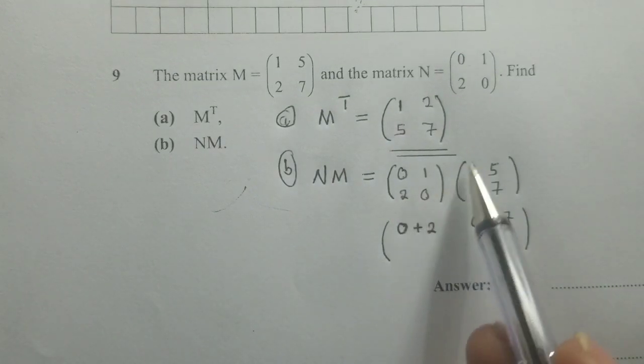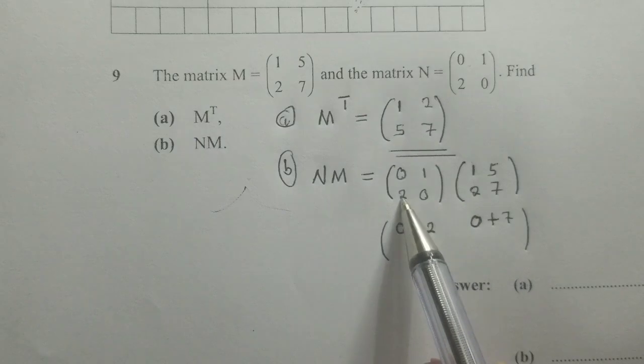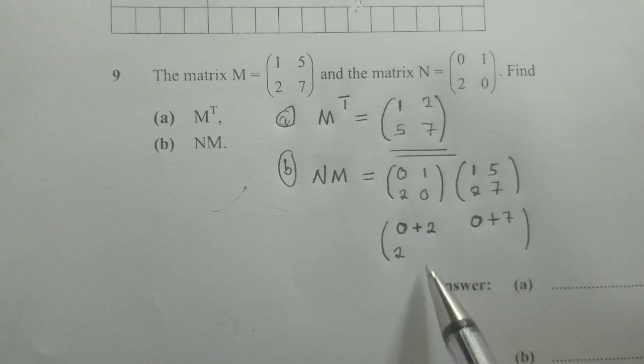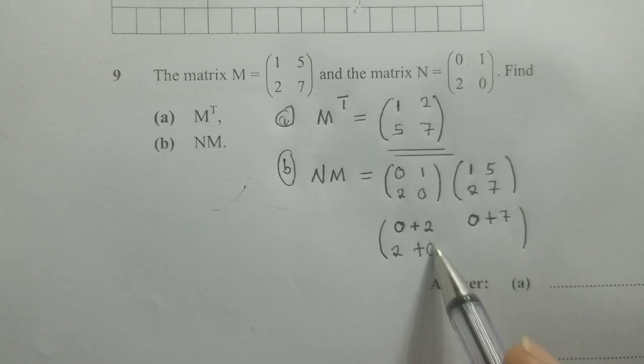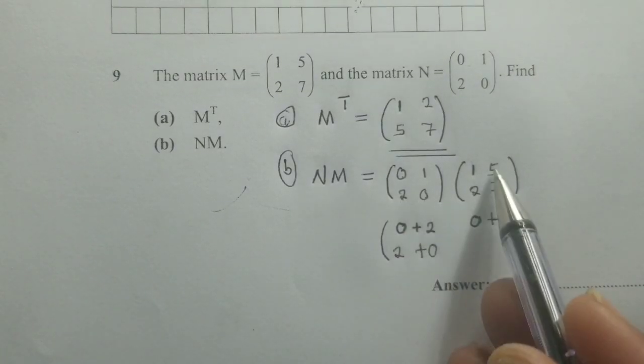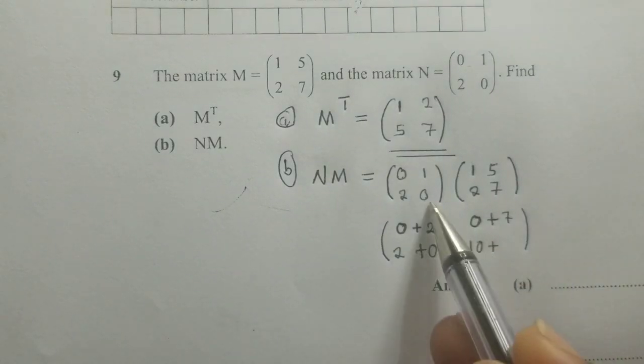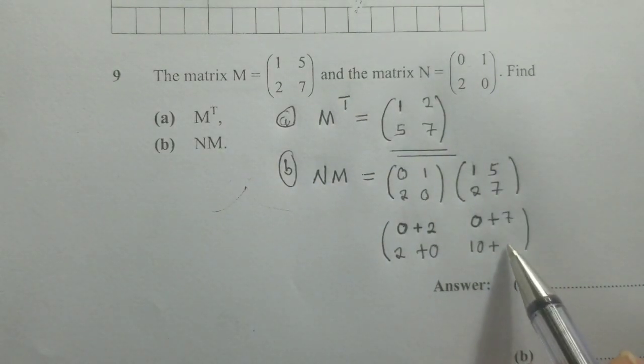Next we come to this row by the column. So 2 by 1, it's 2. 0 by 2, it's 0. Space. 2 by 5, it's 10. Plus 0 by 7, it's 0.